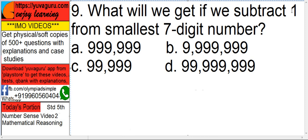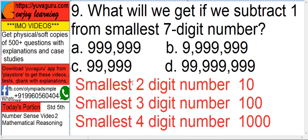If we subtract 1 from the smallest 7-digit number — first tell me, what is the smallest 2-digit number? 10. What is the smallest 3-digit number? 100. Smallest 4-digit number? 1000.